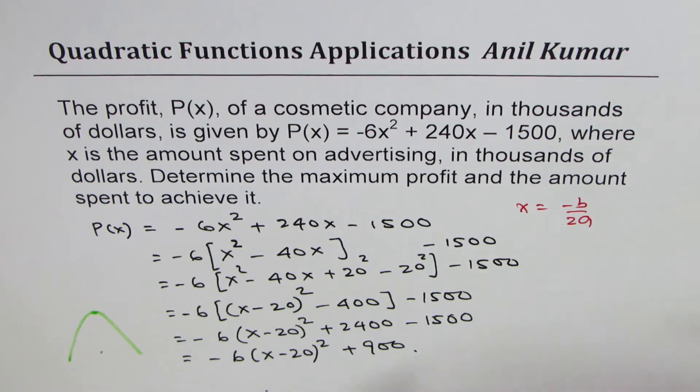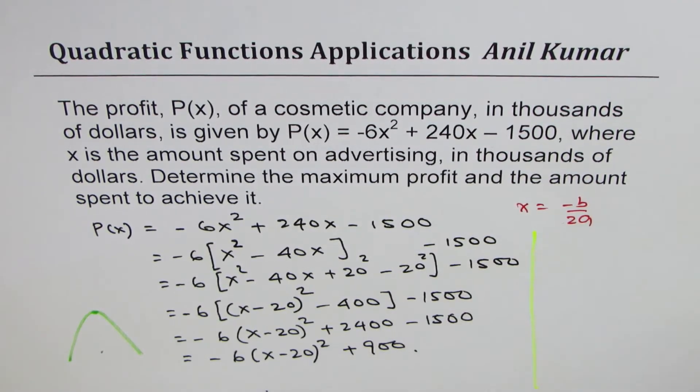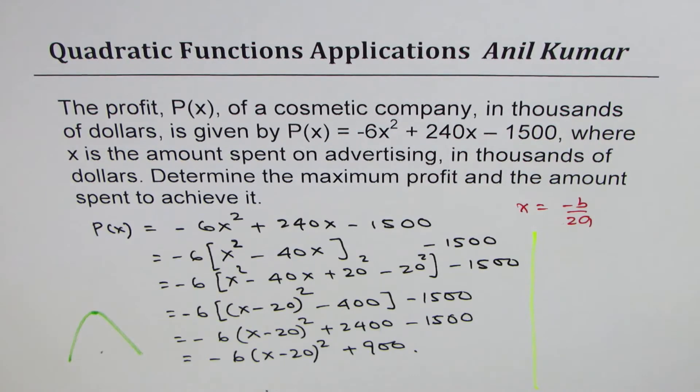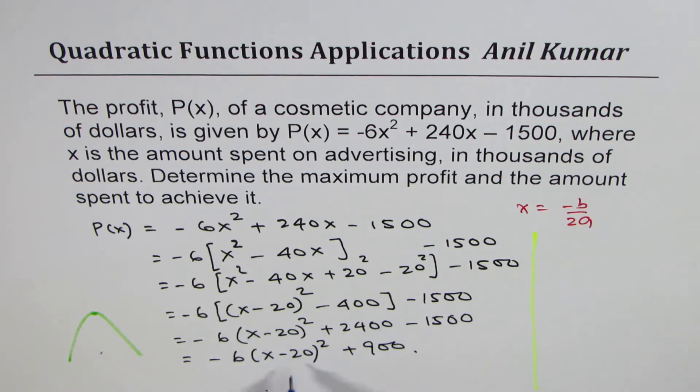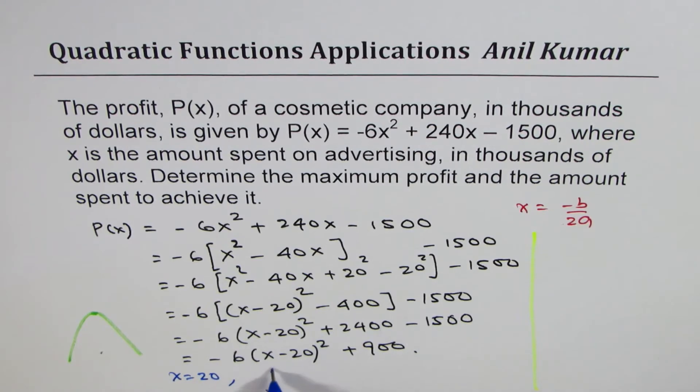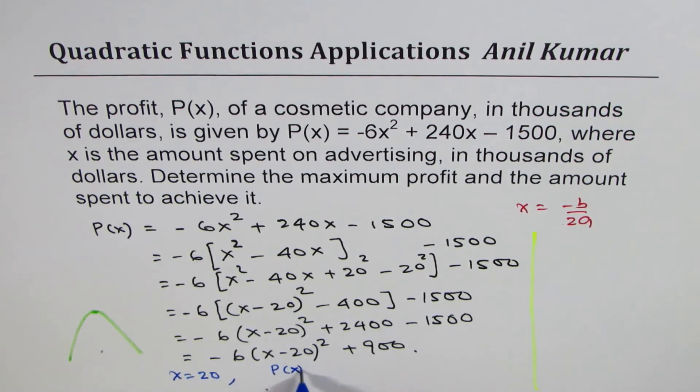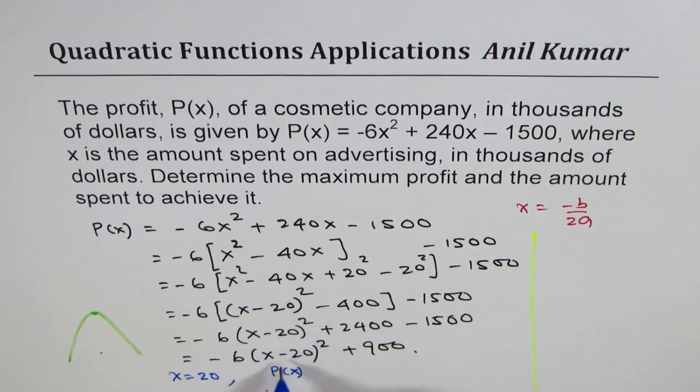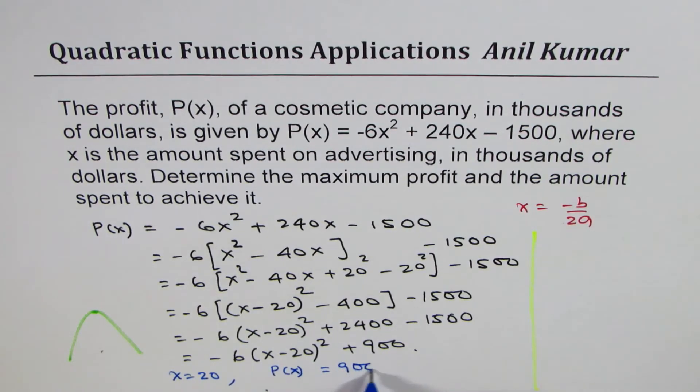So now we have the equation and you can directly read the answer from this equation. The number of items to be sold is 20,000. So x = 20 and we know P(x) will be, when you write 20 this becomes 0, will be 900.